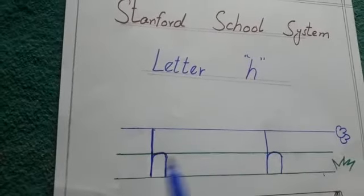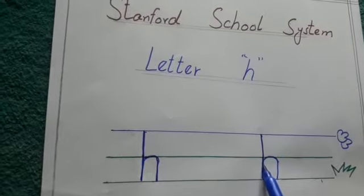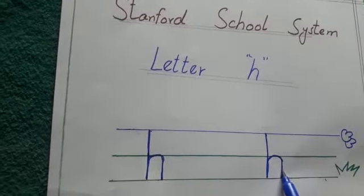I write here again. Make a standing line, make a curve, and make a standing line. This is letter h.